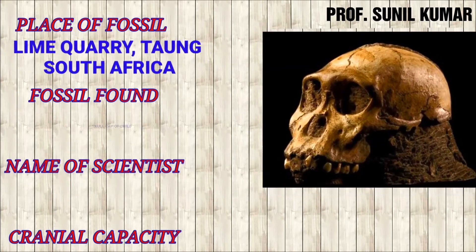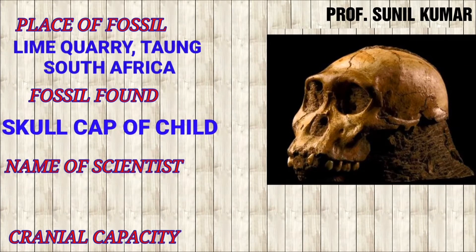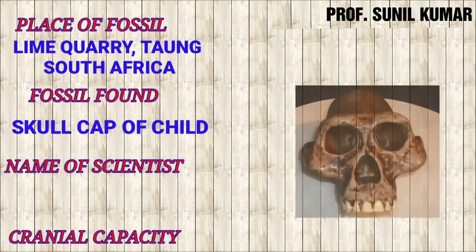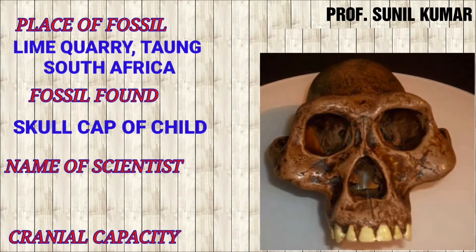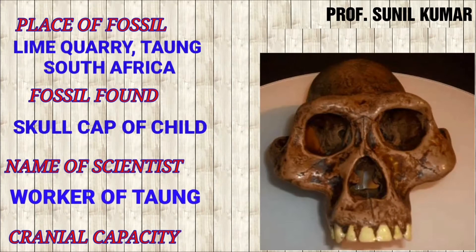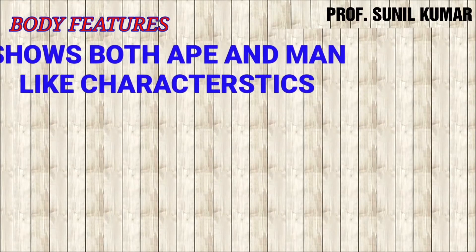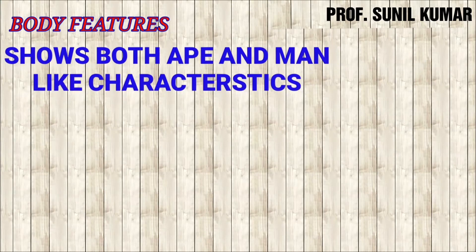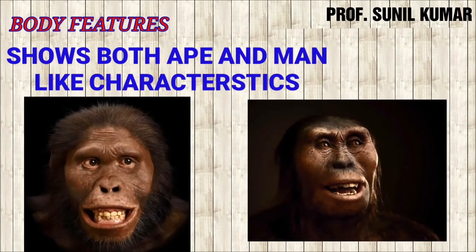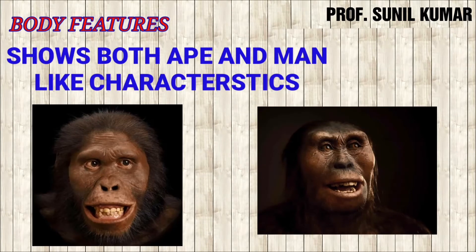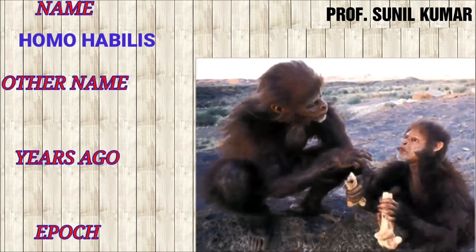There were no scientists involved in the discovery — it was basically the workers of the town who found this fossil. The cranial capacity is not known. Regarding body features, they showed characteristics of both apes and man, having partially ape-like and partially man-like characters. Therefore, Australopithecus can be considered the connecting link between apes and humans.